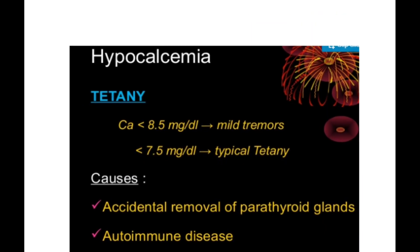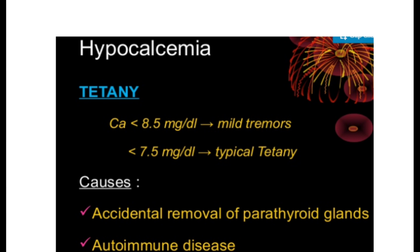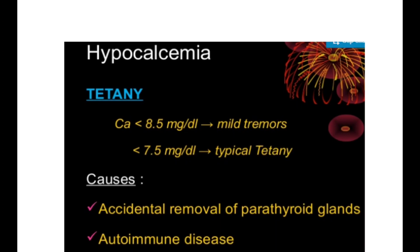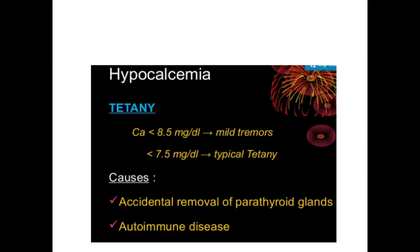When calcium level is less than 7.5 mg/dL it is called typical tetany. Causes of tetany include accidental removal of the parathyroid gland and autoimmune diseases — where the body's own immune mechanism acts against its own cells, treating them as foreign antigens and harming internal organs. Hypocalcemic tetany occurs when serum calcium level is less than 7.5 milligram per dL.